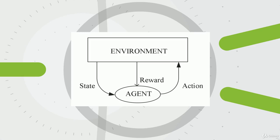Some other important terms: an episode or trial is the sequence of actions from the start to the terminal state — we have some initial state that begins the episode, and after the episode our sequence of actions has been undertaken. Finally, policy defines the action to be taken by the agent in any given state. Policy is really what we care about — not each individual action, but how we respond to the environment in any given state, because that defines our sequence of actions and helps us reach our goal.